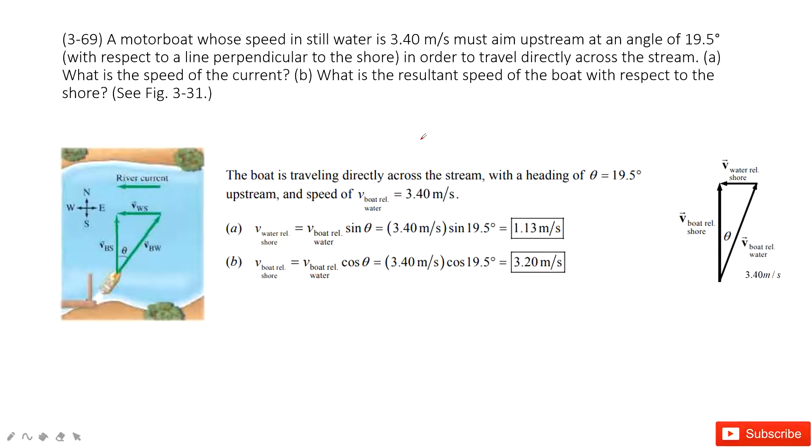It tells us in order to make sure the boat relative to the shore just hits the south, we need to make an angle for the boat relative to the water. This angle is 19.5 degrees. This theta is given, and also the velocity of the boat relative to water is given.